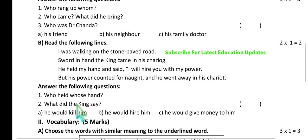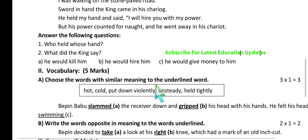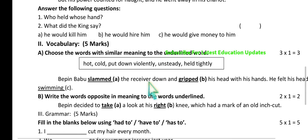The questions on the poem stanza include: who held whose hand — identifying the character from the stanza. What did the king say — would he kill him, would he hire him, or would he give money to him? It is very easy to pick up the answer from the stanza. Now, Part Two — Vocabulary: similar meanings and synonyms of the given words.